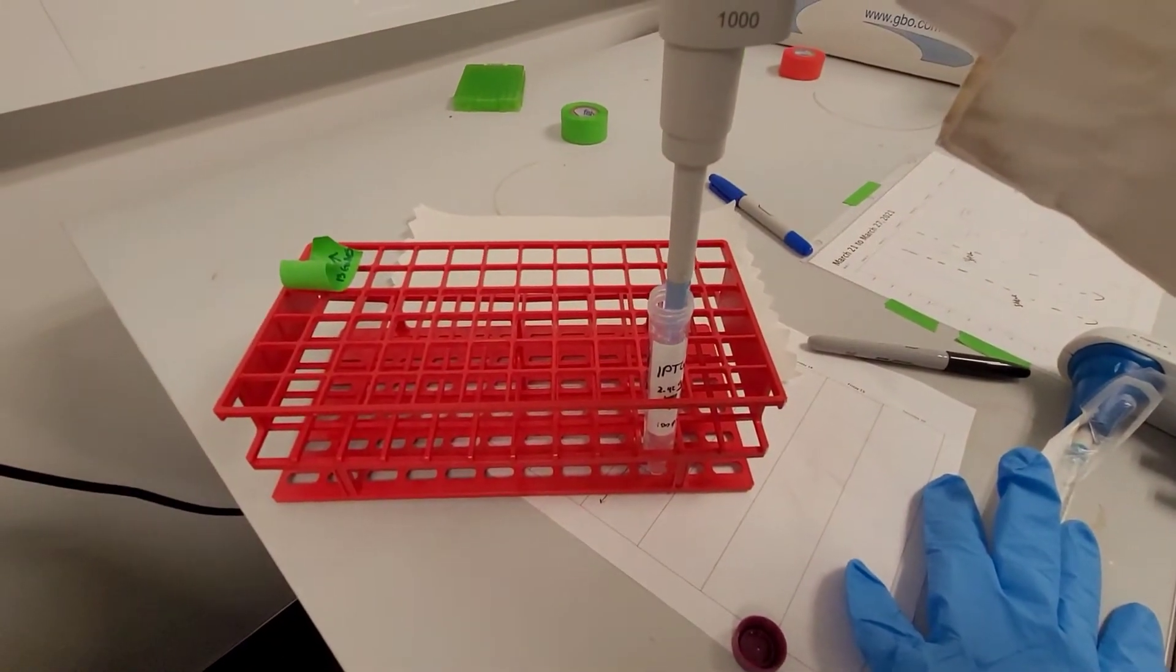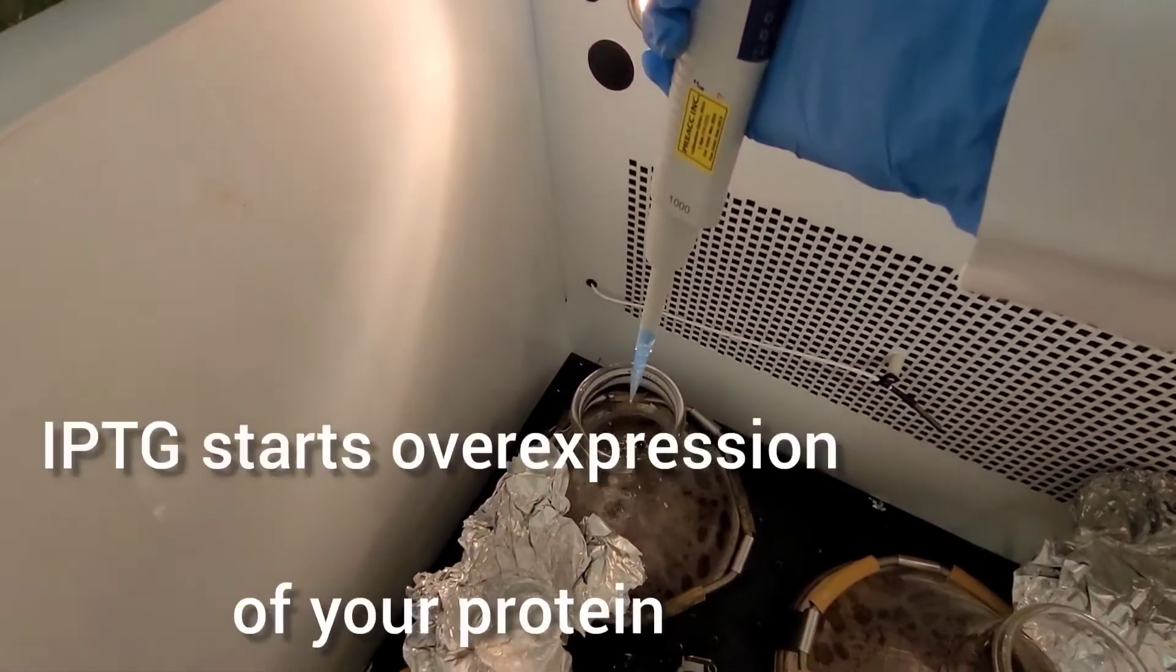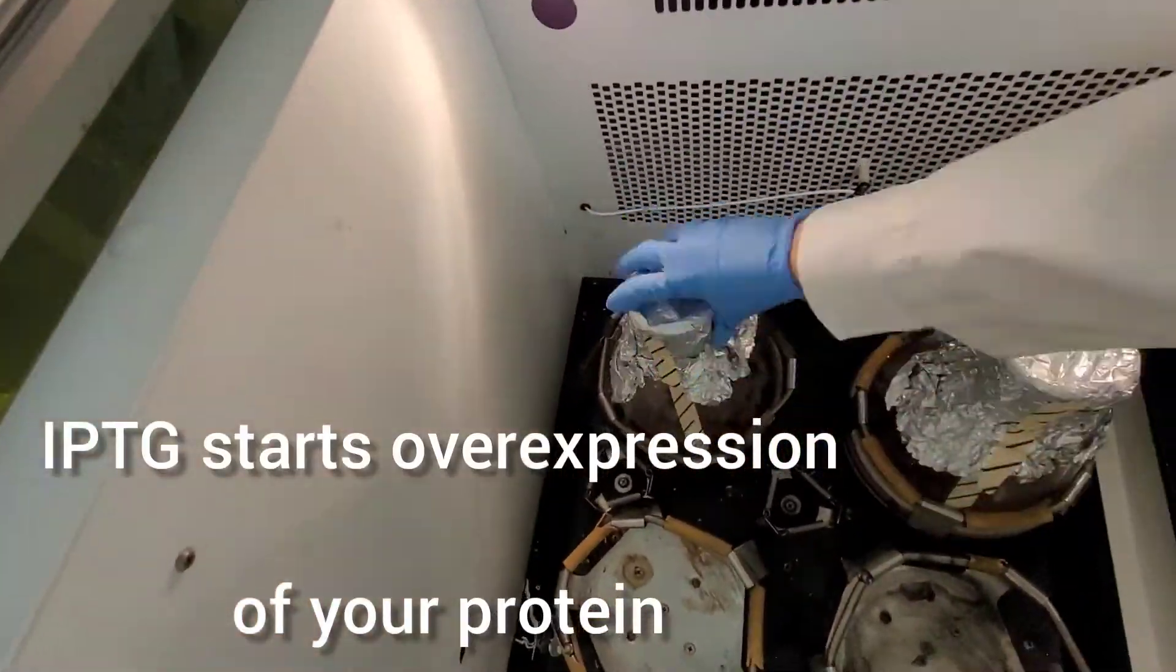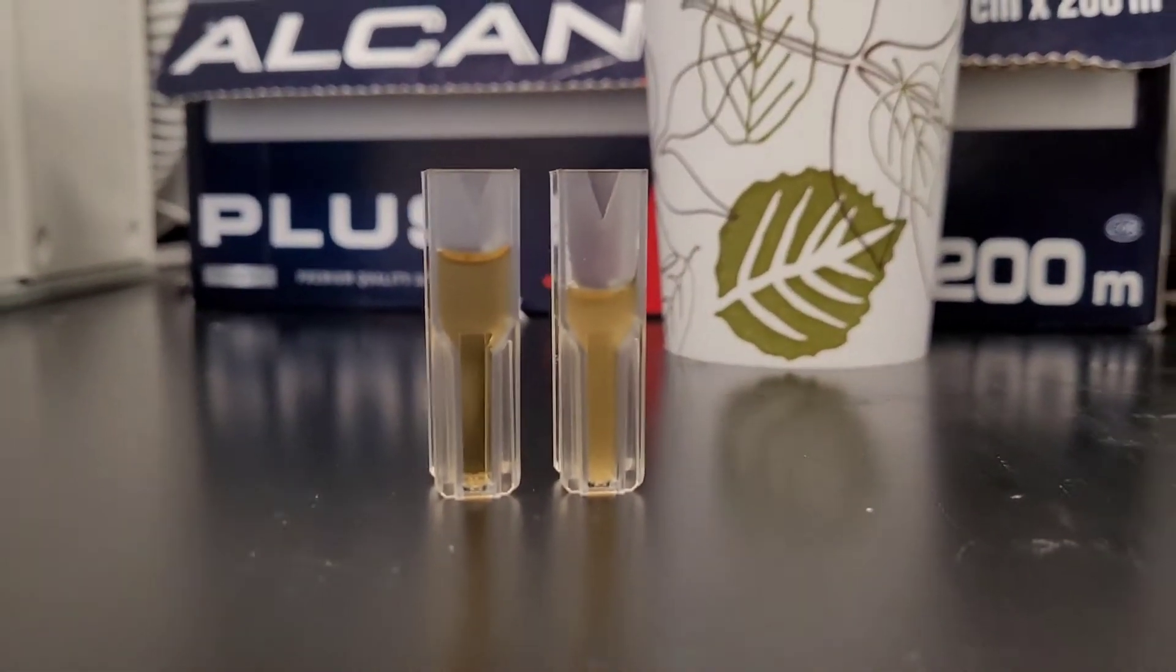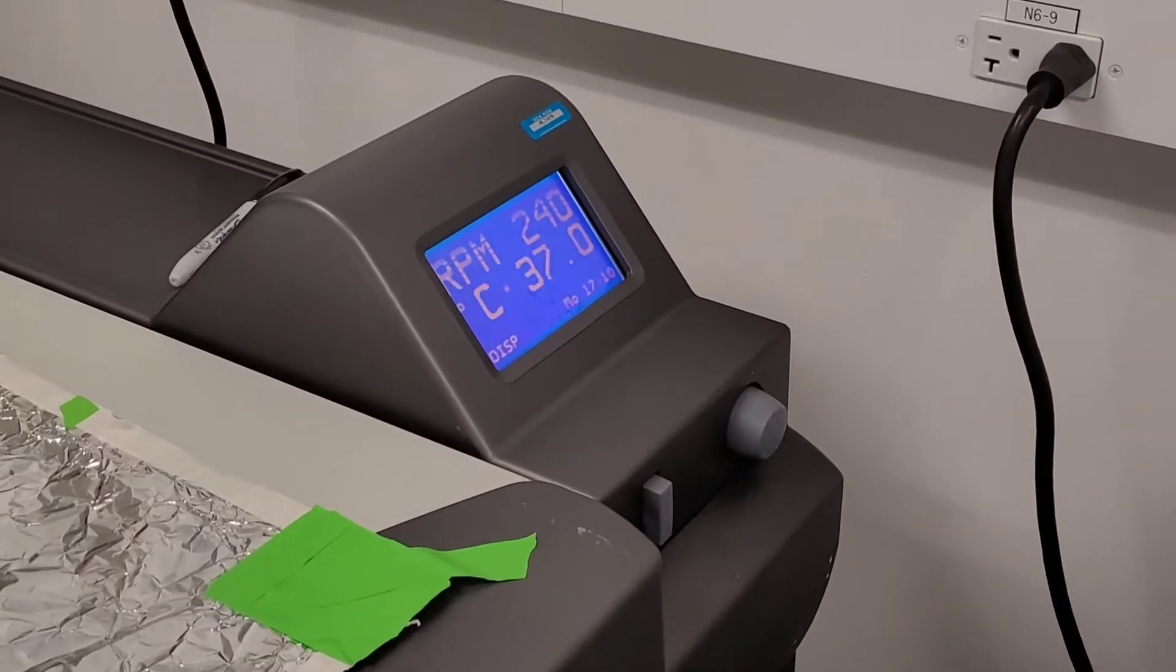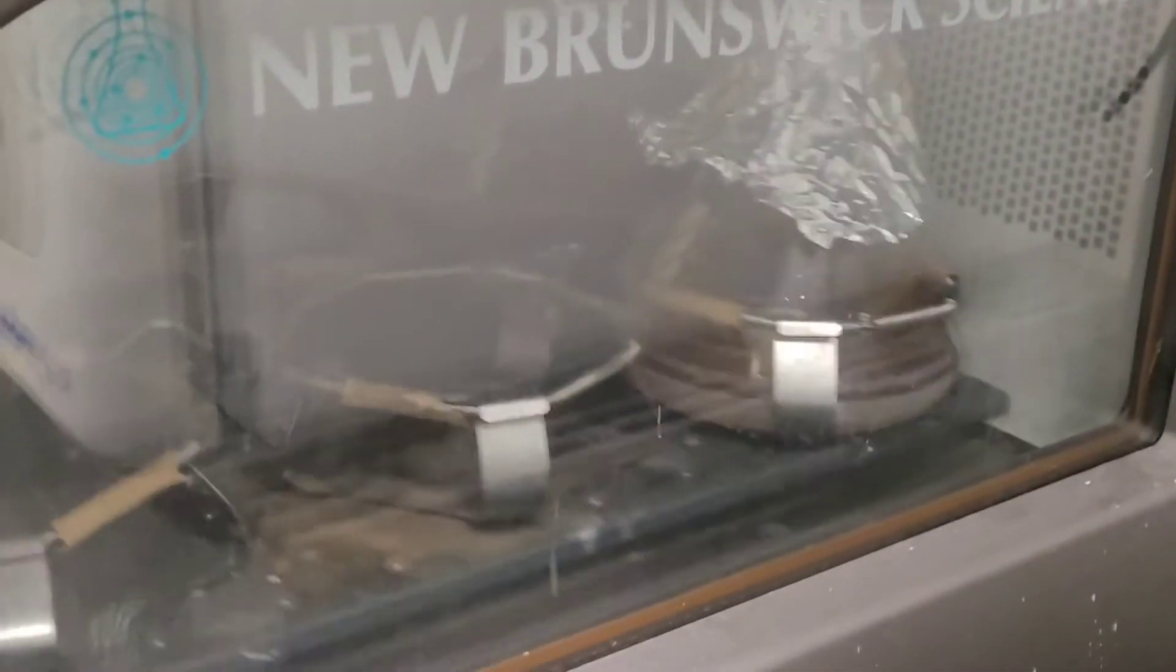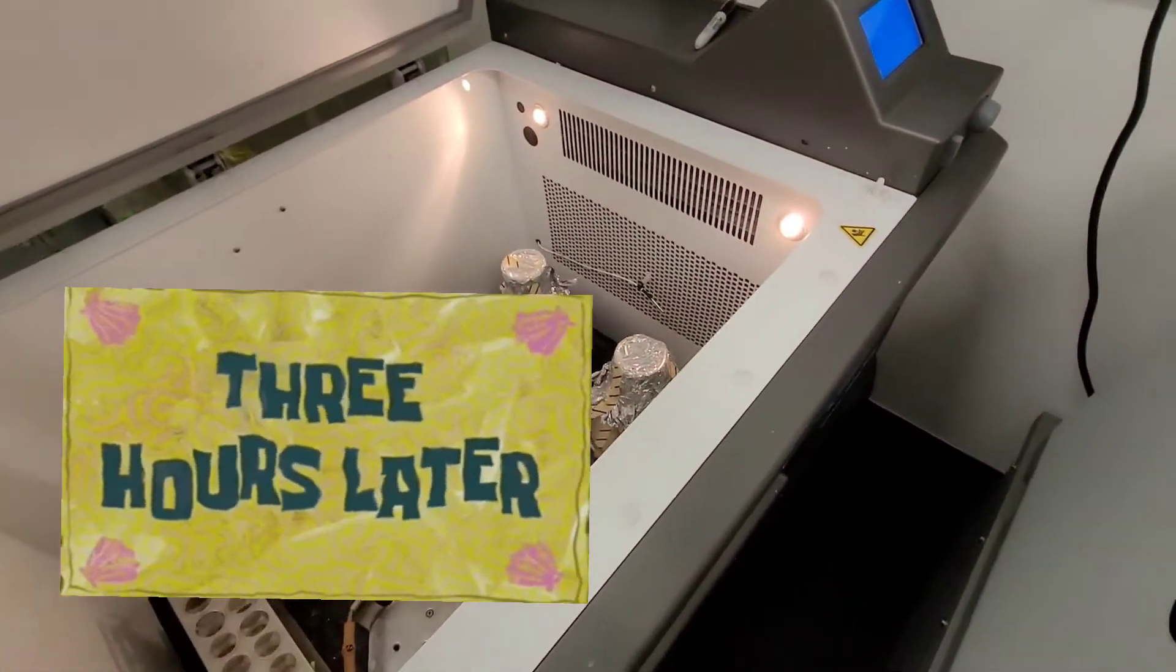After you reach the optical density of 0.7 to 0.8, you can add one mil of IPTG, or isopropyl thio galactopyranoside. This will promote the expression of your protein. This is like a similar molecule to galactose and it will permanently induce the expression of your protein. After you do this, the growth of the cells will stop and then all the energy will go towards expressing the protein. After this you need to leave it for three hours at 37 degrees.